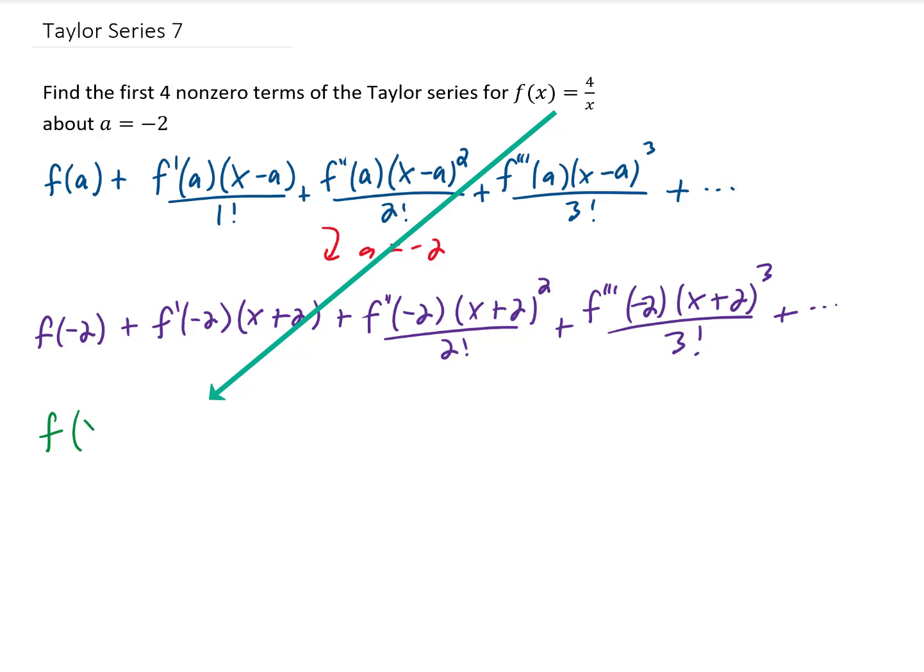Our function is 4 over x, and it's going to be easier to take derivatives of this function if we think of it as 4 times x to the negative first power. Now, our first derivative can be found just by using the power rule, and we can continue to use the power rule two more times.